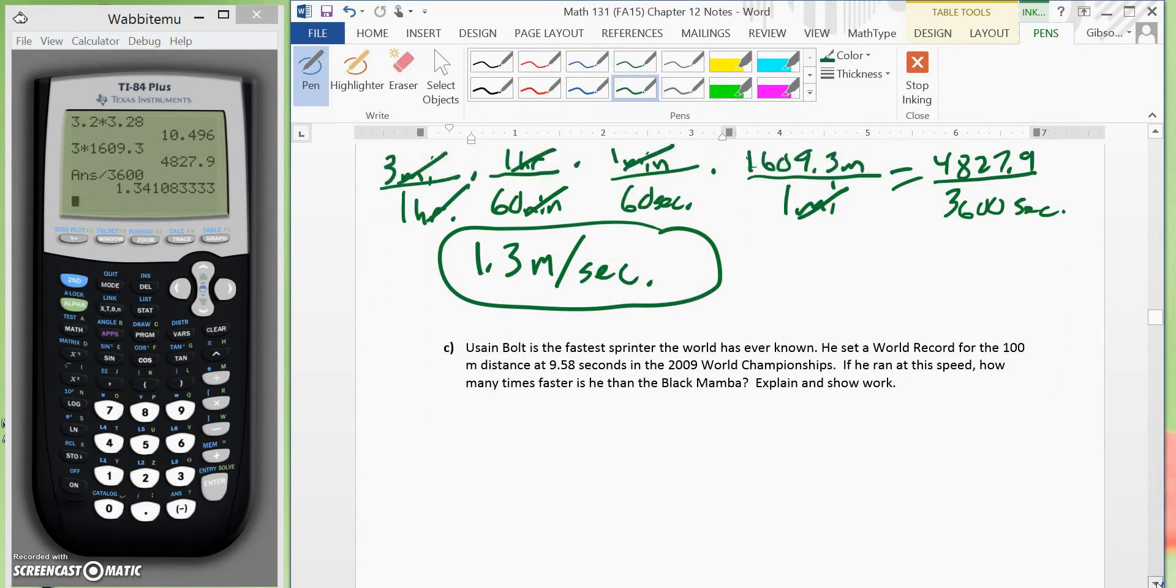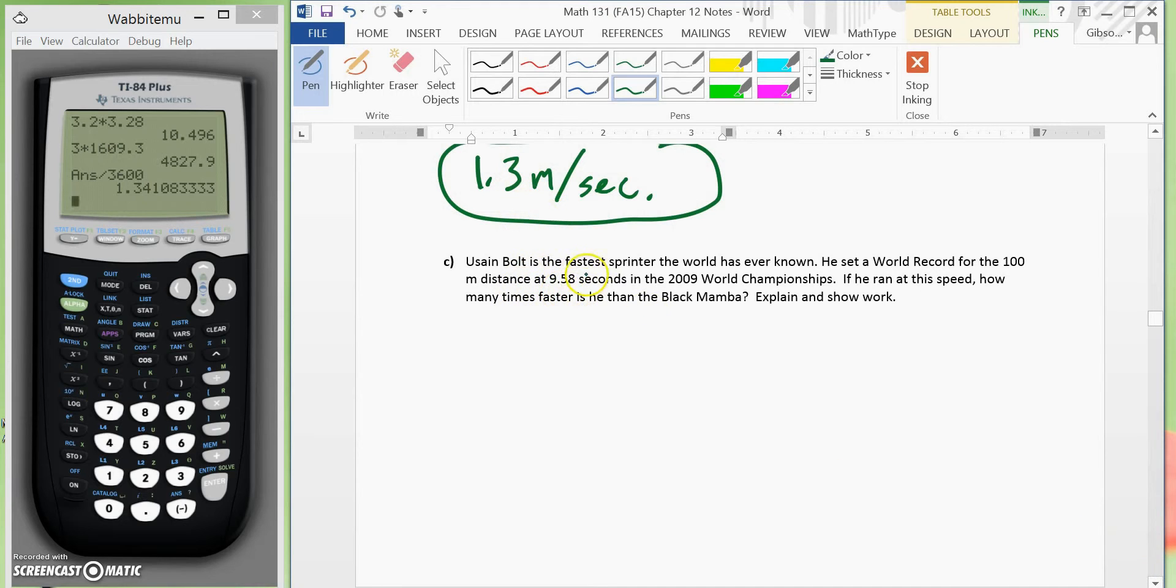Now, scroll to see. It says Usain Bolt is the fastest sprinter the world has ever known. He set a world record for 100 meters distance at 9.58 seconds in the 2009 World Championships. He ran at this speed. How many times faster is he than the black mamba?